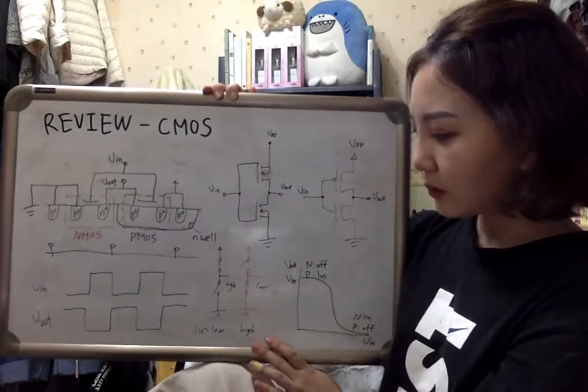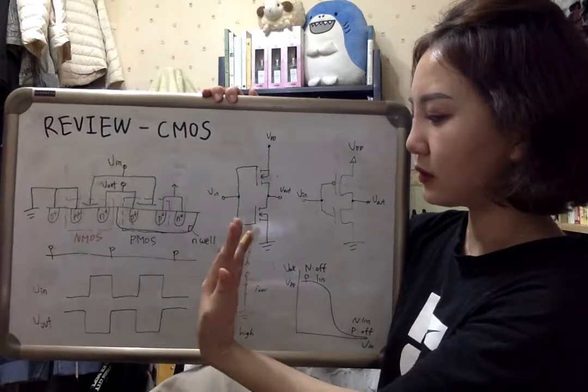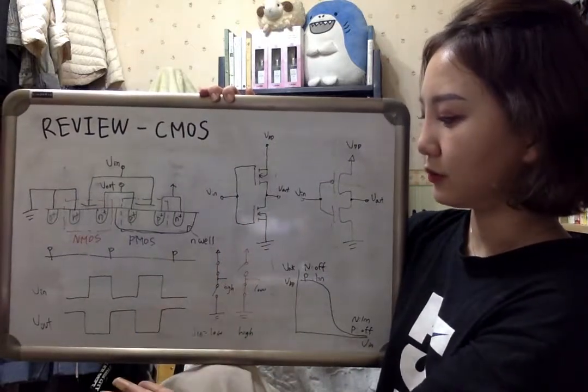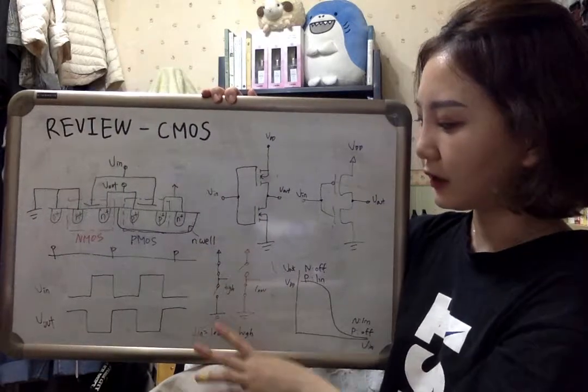When we apply a low input signal, the PMOS is closed and NMOS gets open. So we can get high output signal VDD.